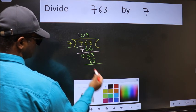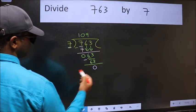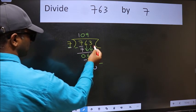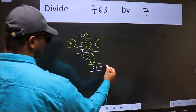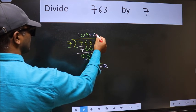Now we should subtract. We get 0. No more numbers to bring it down. So we stop here. This is our remainder and this is our quotient.